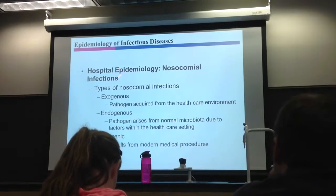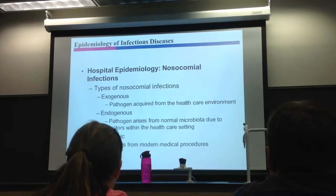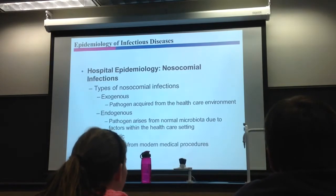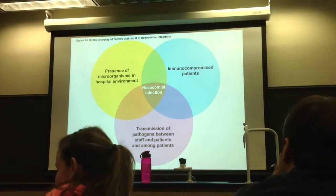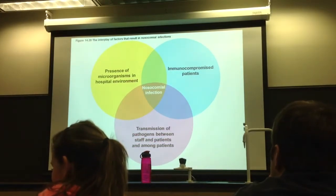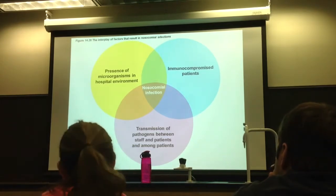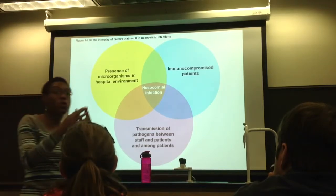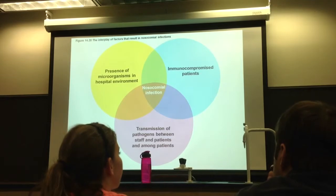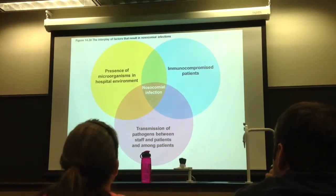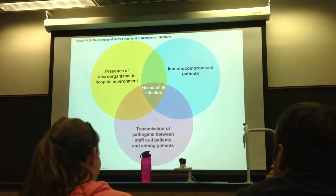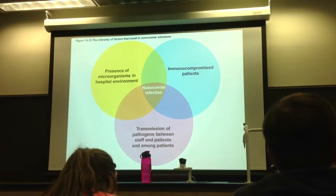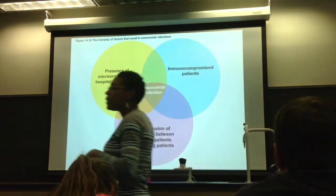Nosocomial infections account for about 10% of all infectious diseases nationally. A Venn diagram shows what must interact for a nosocomial infection to occur: you need microorganisms present in the hospital environment — easy, since there are many sick people — and you need those microbes transmitted from the environment to a person, via doctors, staff, or even visiting family members.